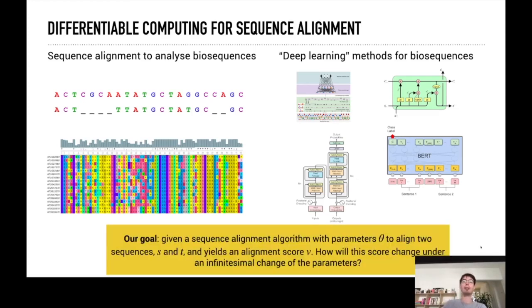In our framework we have a sequence alignment algorithm with parameters theta to align two sequences, let's call them s and t. This yields an alignment score v, and our question is how will the score change if we change the parameters a tiny bit.